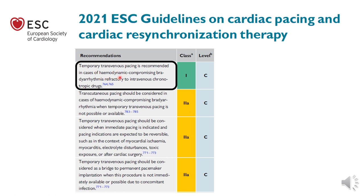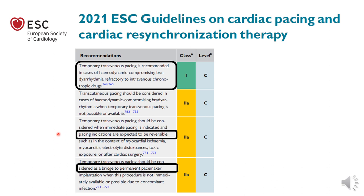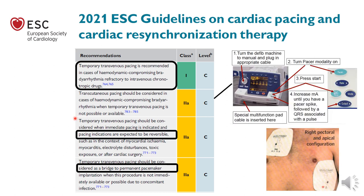Temporary transvenous pacing is indicated for hemodynamically compromising bradyarrhythmia refractory to intravenous chronotropic drugs. It can also be used transiently in cases of reversible bradyarrhythmia, such as in myocardial infarction, and as a bridge to permanent pacemaker when the setting for permanent pacemaker insertion is not yet available.